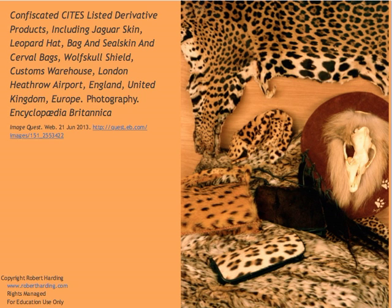Many wild populations of species have been decimated not due to a lack of laws, but due to a lack of efficient enforcement. Here you can see just a sample showing the extent of the massive underground industry for the trade in endangered species, despite the fact that these animals have been listed in Appendix One of the Convention on International Trade in Endangered Species (CITES).